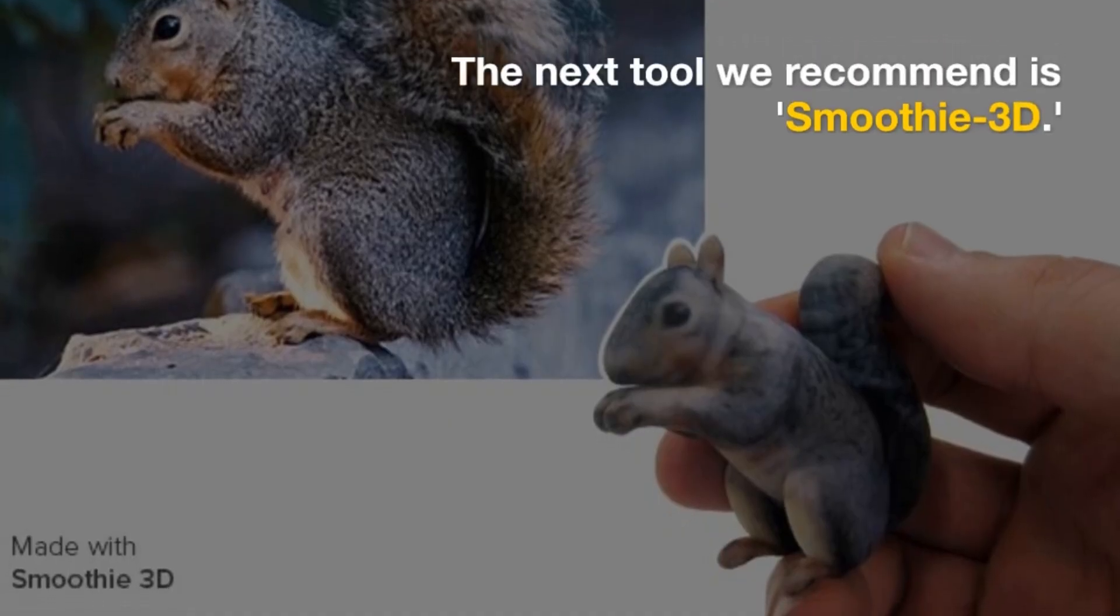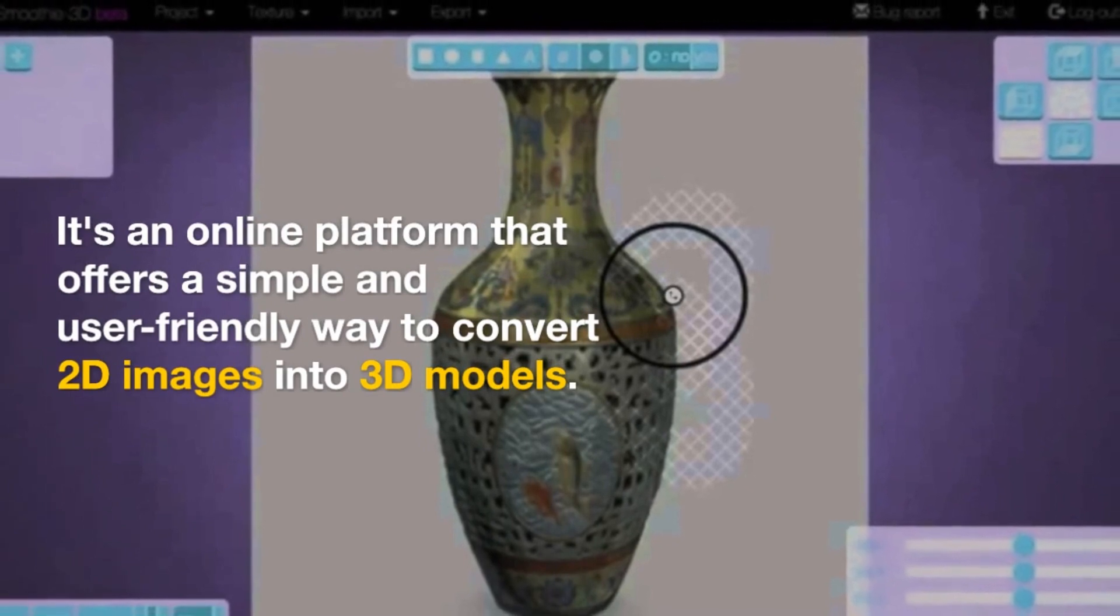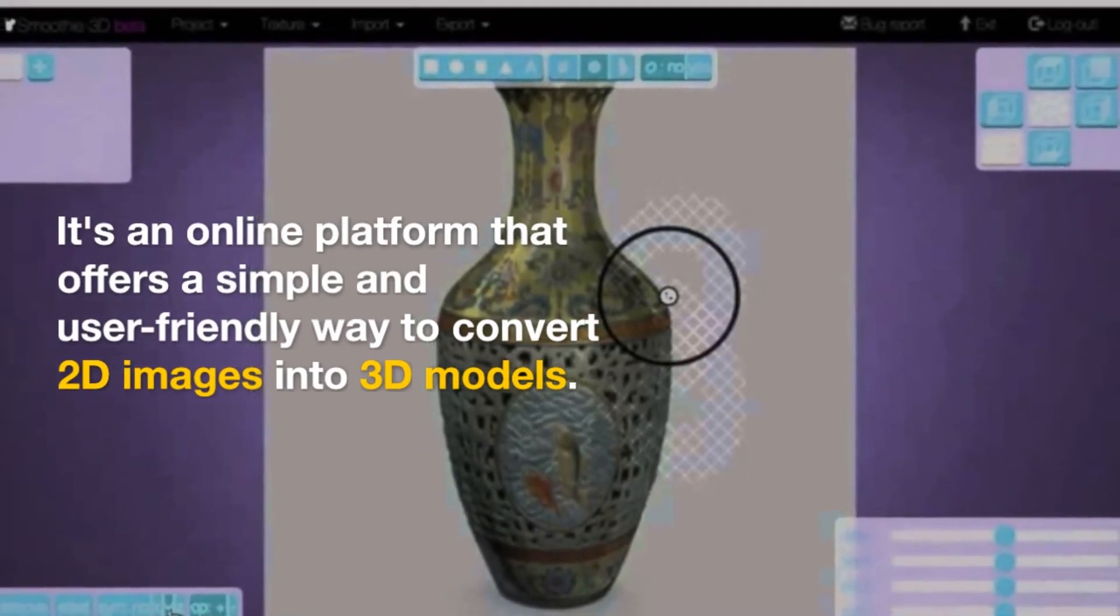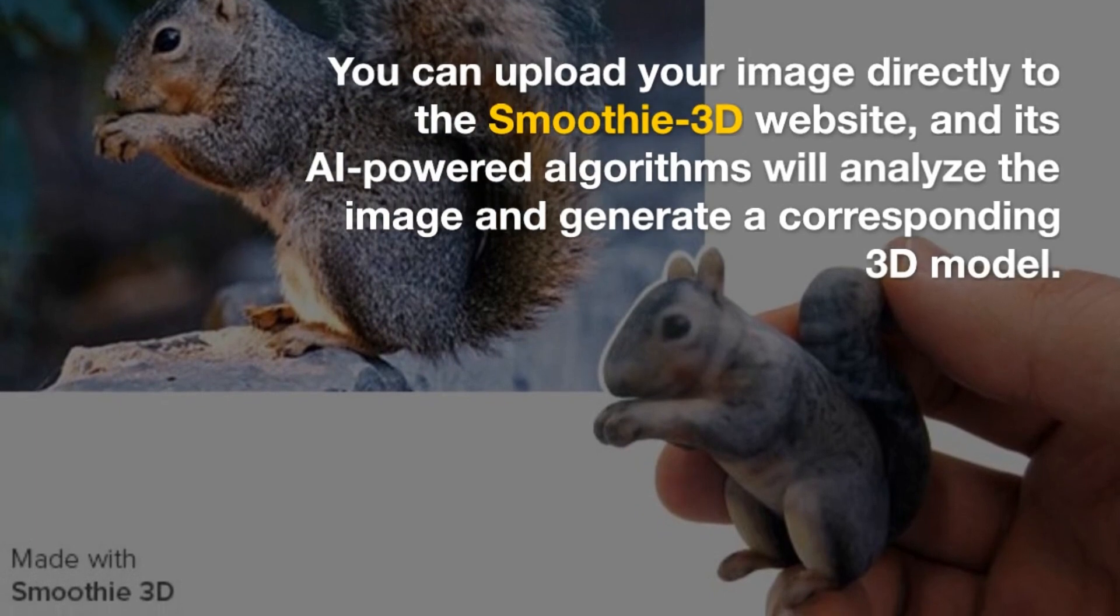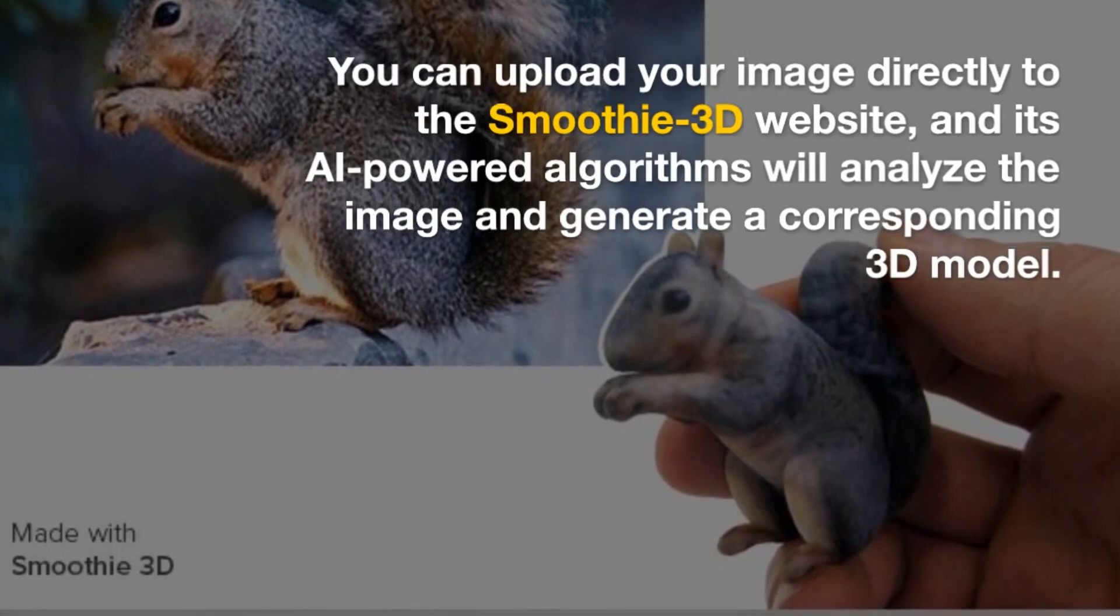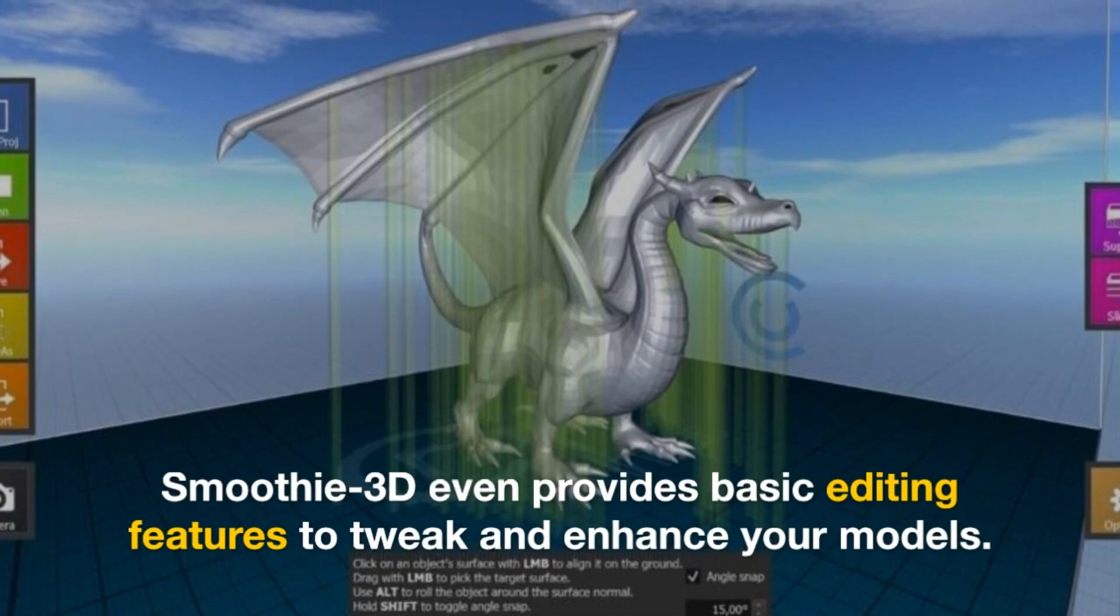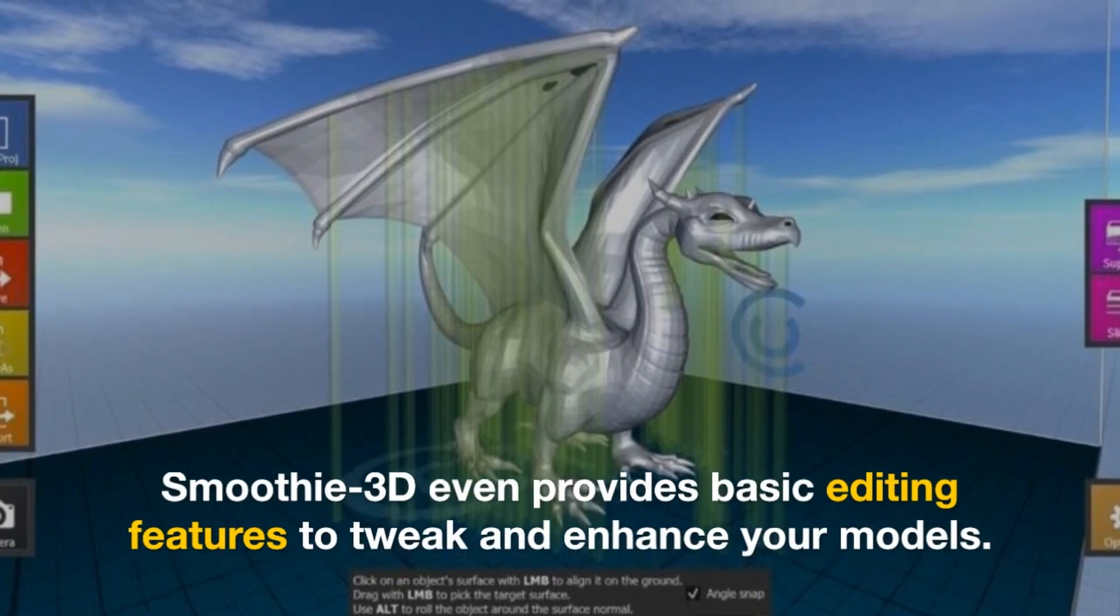The next tool we recommend is Smoothie 3D. It's an online platform that offers a simple and user-friendly way to convert 2D images into 3D models. You can upload your image directly to the Smoothie 3D website, and its AI-powered algorithms will analyze the image and generate a corresponding 3D model. Smoothie 3D even provides basic editing features to tweak and enhance your models.